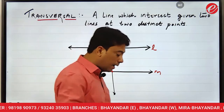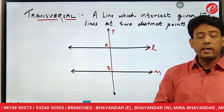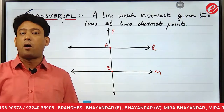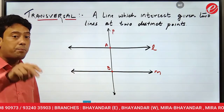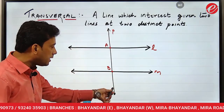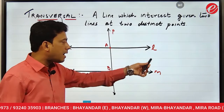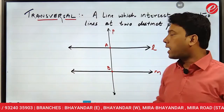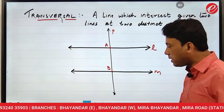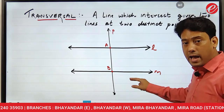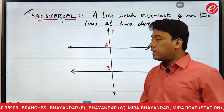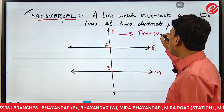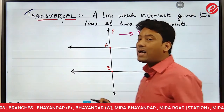So what is a transversal? Transversal is a line which intersects any two given lines at two distinct points. Notice carefully — line P intersected both line L and line M at two different points, point A and point B. So the two given lines are L and M, and line P intersected them — therefore line P is called a transversal.